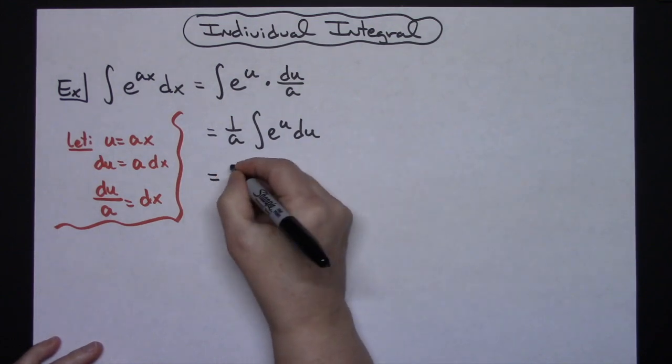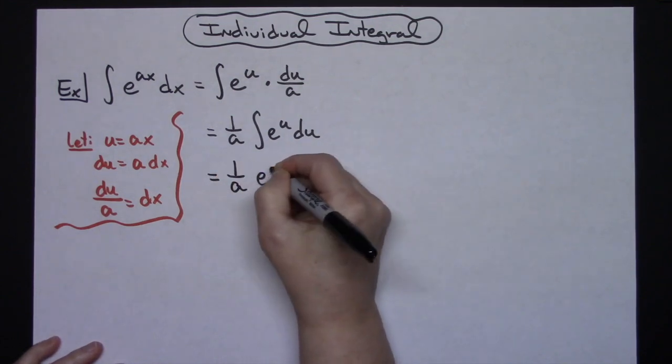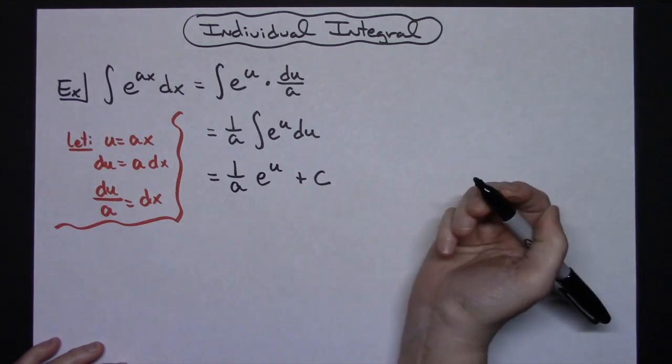So I'm ready to integrate. I'm going to have 1 over a e to the u and then plus c because my integration is done.